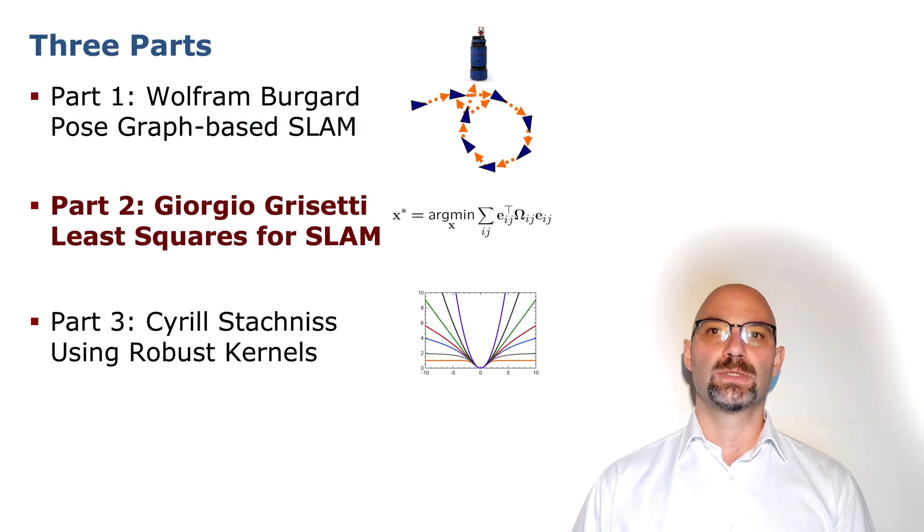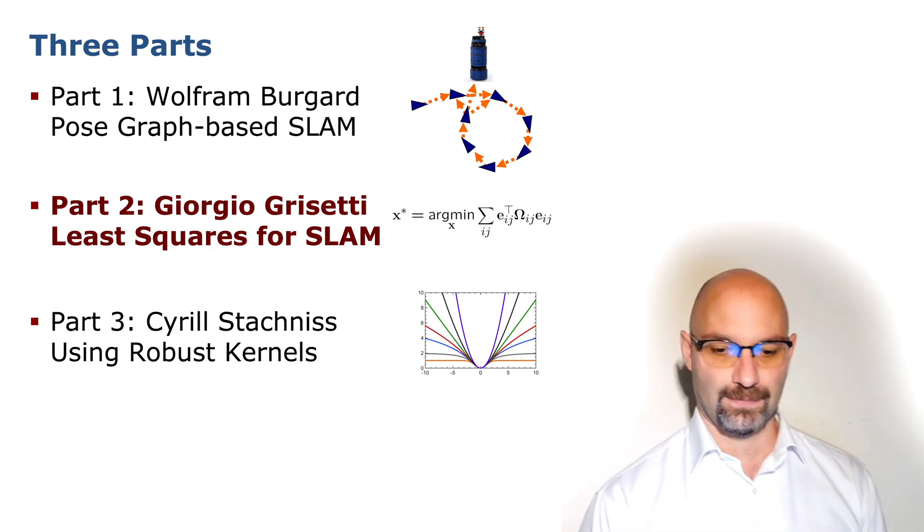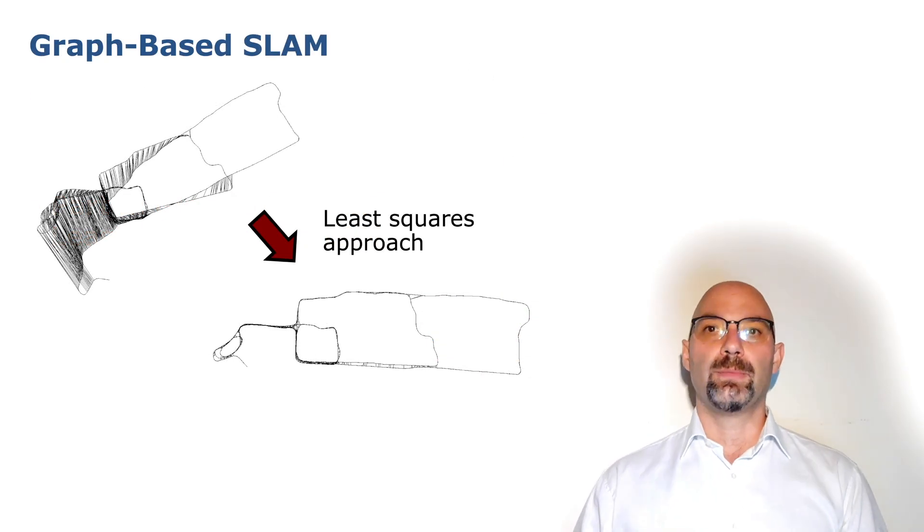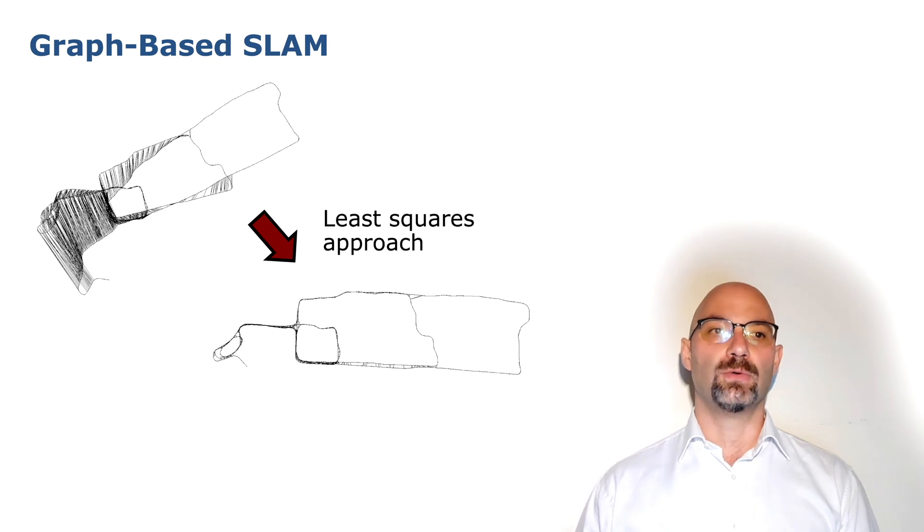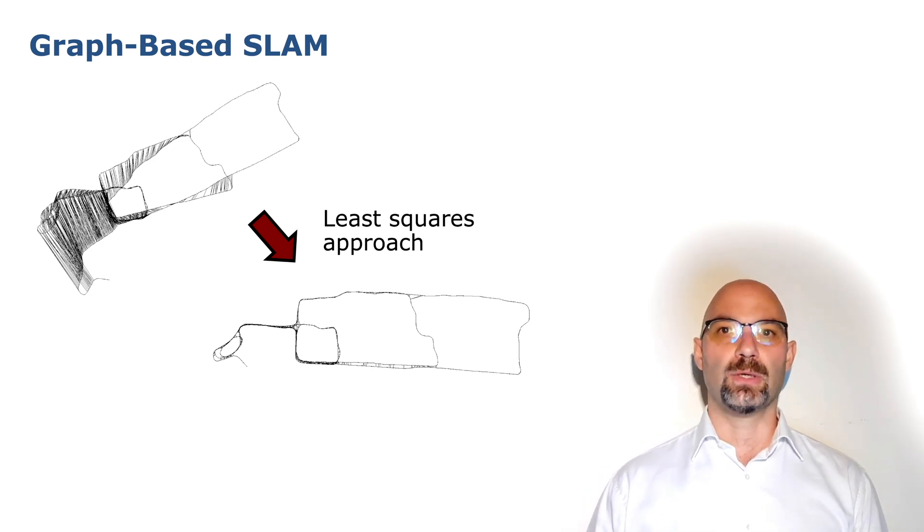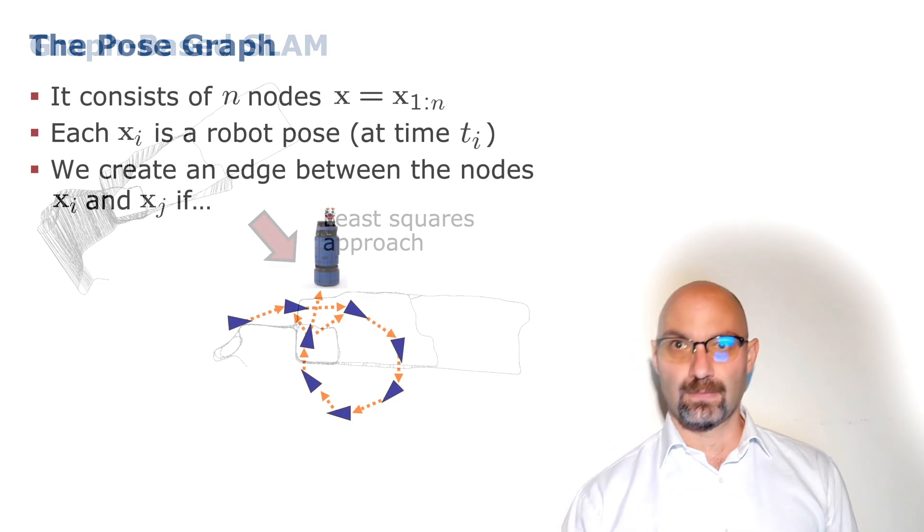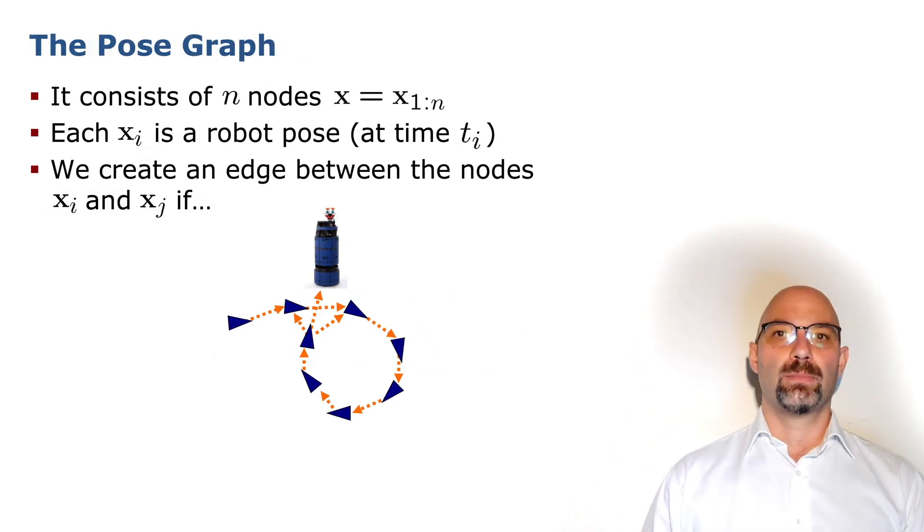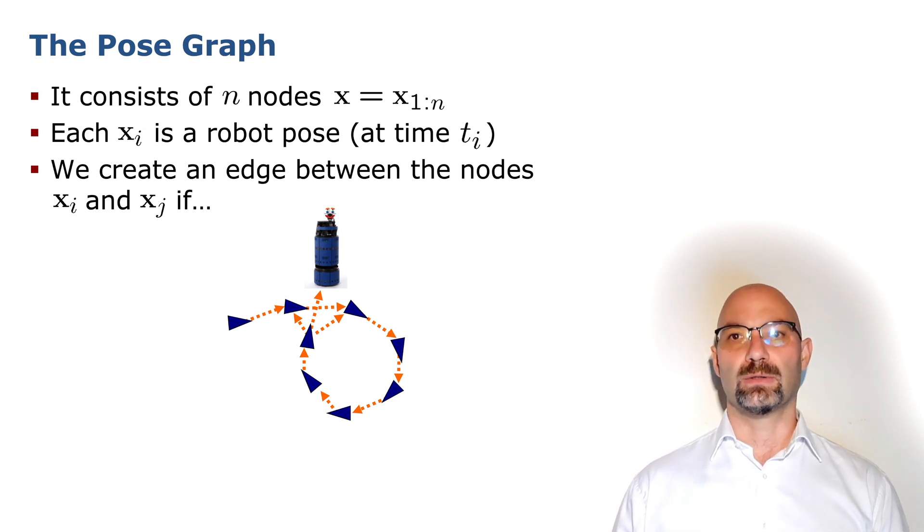In the first part Wolfram was telling you how to represent SLAM as an optimization problem. In the second part we will investigate the structure of this problem and how to solve it. We have to remind that in the end our ultimate goal is to calculate the configuration of the robot trajectory that is maximally consistent with the observation. This means that we would like to go from a situation like the one depicted on the top left to the one depicted on the bottom right of this slide.